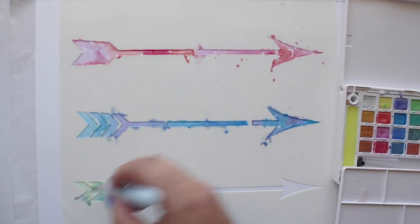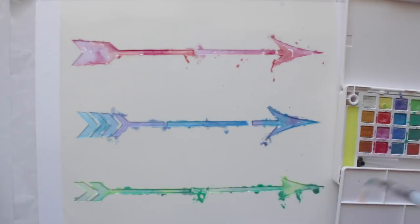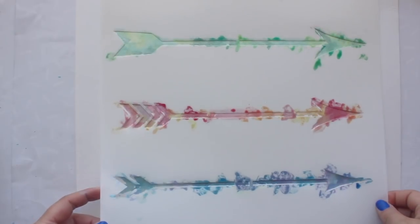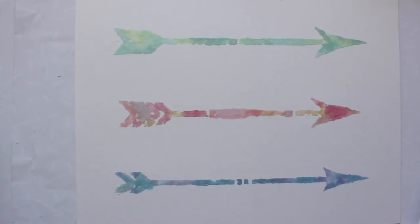The first time I did this, I removed the stencil immediately, which wasn't a good idea since the paint spread and the arrows weren't recognizable. So I tried again, allowing the color to dry fully before lifting the stencil. This is the look I wanted: soft and hand painted.